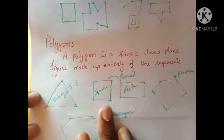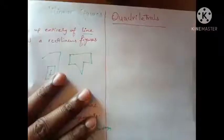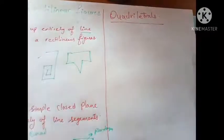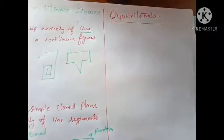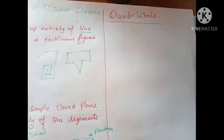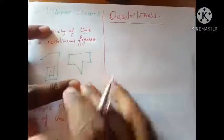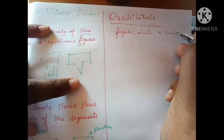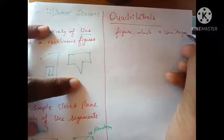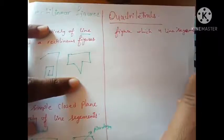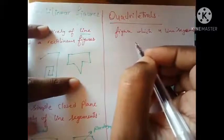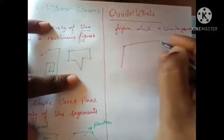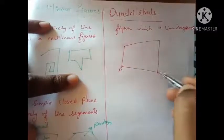We'll be studying about all these categories of polygons. This chapter contains a greater portion on quadrilaterals, so we're going to study about quadrilaterals and their properties. A quadrilateral is a closed figure which has four line segments. Any figure with four line segments that is closed is called a quadrilateral.